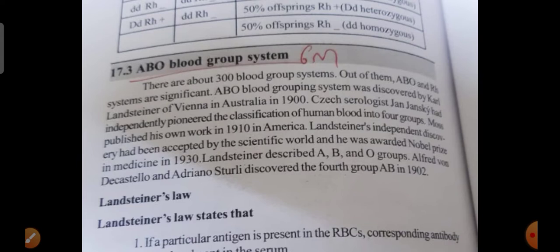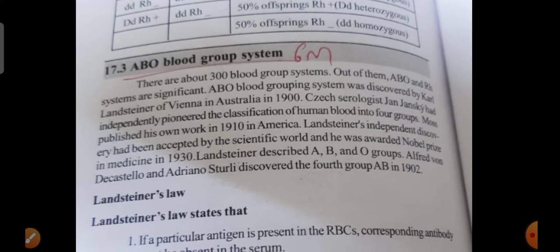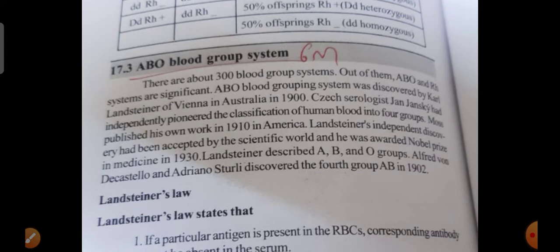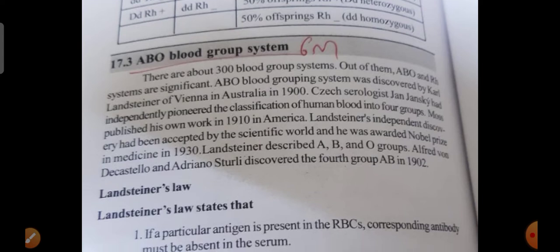The ABO grouping system was described by Landsteiner of Vienna in 1900. The neurologist Jan Janský had independently proposed a classification of human blood into four groups and published his work in 1907 in America. Landsteiner's independent discovery was accepted by the scientific world, and he was awarded the Nobel Prize in Medicine in 1930. Decastello and Sturli discovered the fourth group, AB, in 1902.